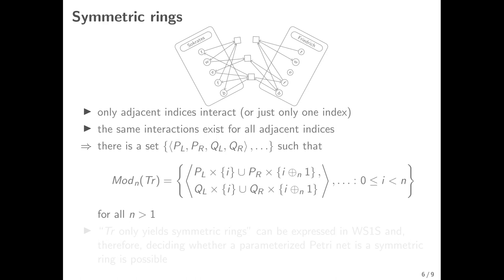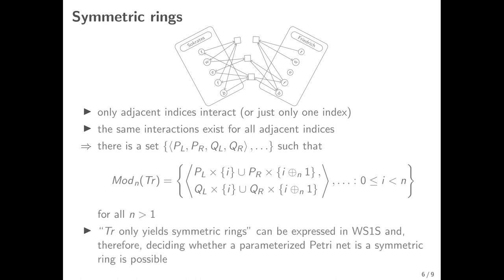If we are presented with an arbitrary transition formula, it's initially unclear whether it models symmetric rings. But it can be expressed in weak S1S that a given transition formula only yields symmetric rings. Thus, we can decide whether the presented parameterized system is a symmetric ring — this becomes a decidable problem given the transition formula.